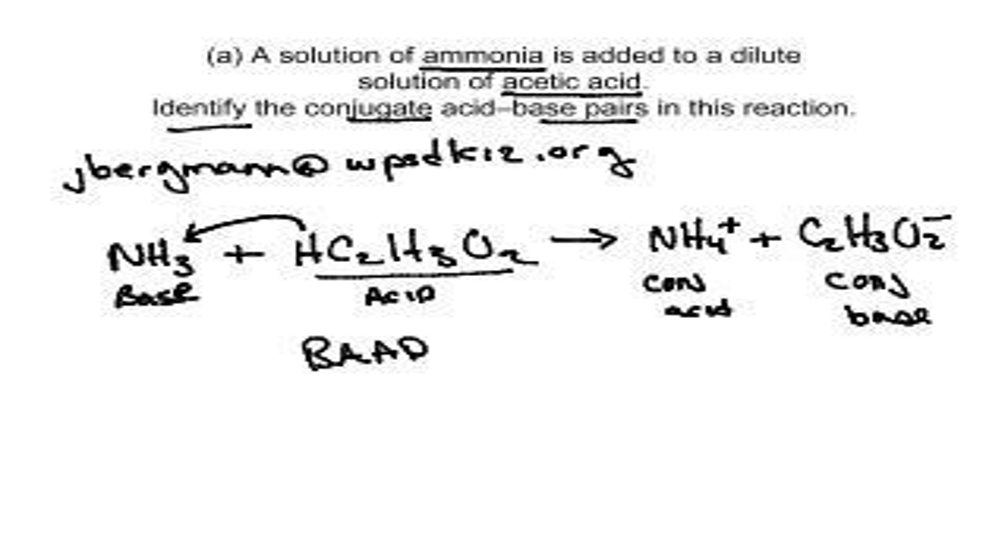The proton donor is the acid, so that makes this the acid, and the proton acceptor is the ammonia, so that would be the base. Remember, acids and bases are BAD - base acceptor, acid donor. What does a sheep say? BAD. That makes the ammonium the conjugate acid, and the acetate is the conjugate base.